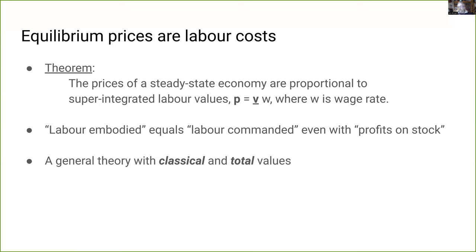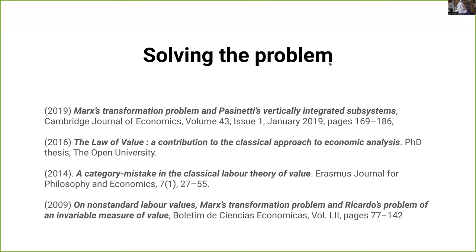We need to recognize multiple measures of value, which answer different kinds of questions and play different theoretical and causal roles. Classical values are purely technical costs, independent of institutional setup — if we want to investigate the technical productivity of labor over time, how the working day splits into necessary and surplus parts, or by how much workers are exploited, classical values are the ones to use. Super-integrated values include non-technical social costs that depend on the institutional setup — these are the ones to use when investigating the relationship between steady-state prices and labor time. We need both kinds to understand and critique the capitalist system.